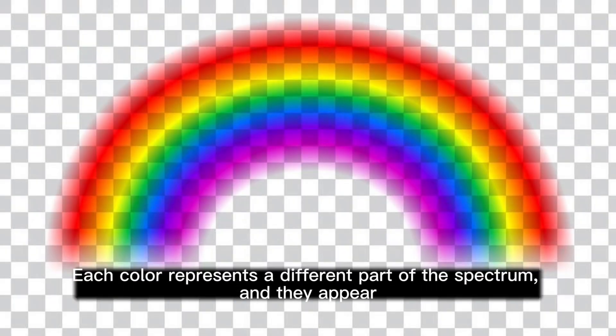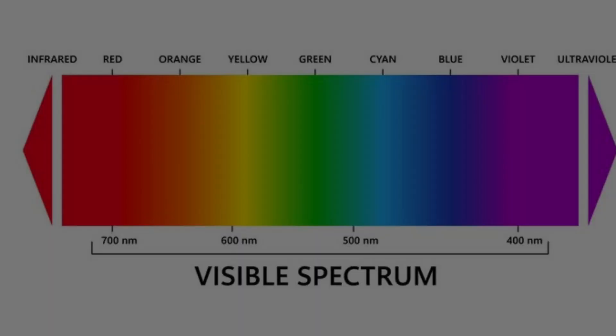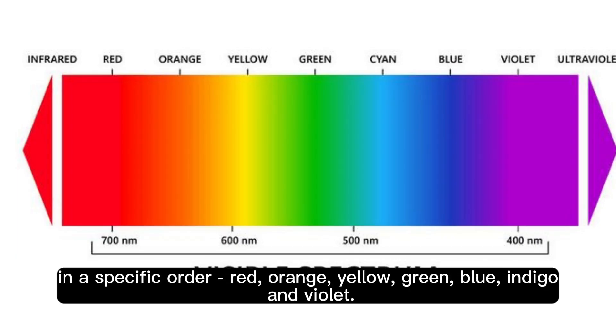Each color represents a different part of the spectrum, and they appear in a specific order: red, orange, yellow, green, blue, indigo, and violet.